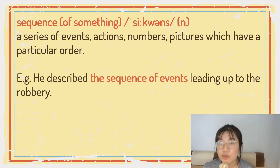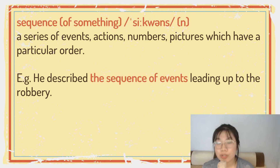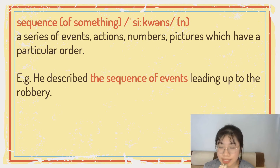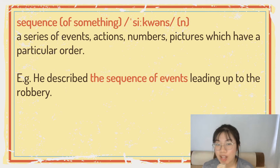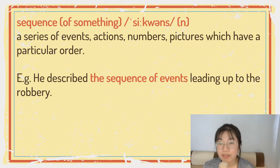So, we have 'a sequence of something', which is a series of events, actions, numbers, pictures which have a particular order. For example: he described the sequence of events leading up to the robbery.